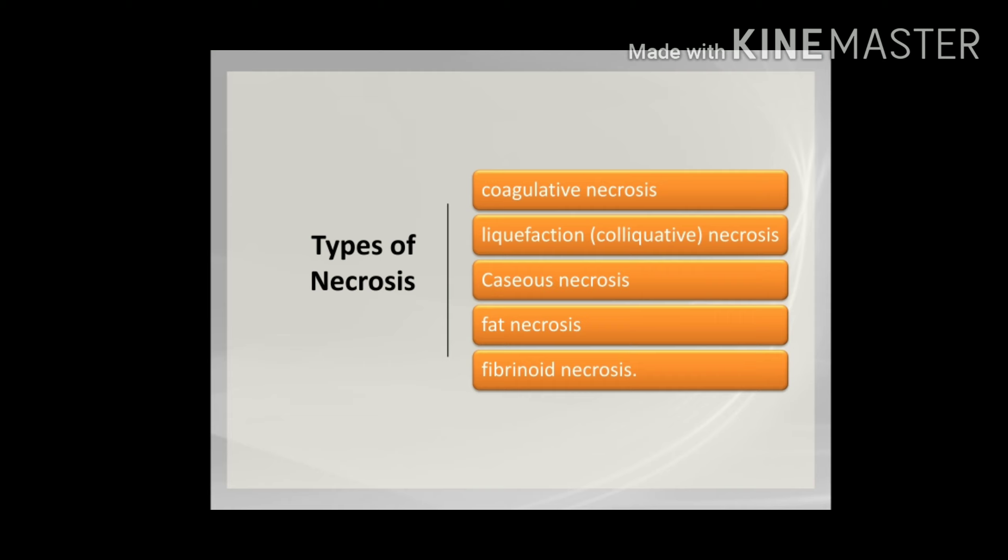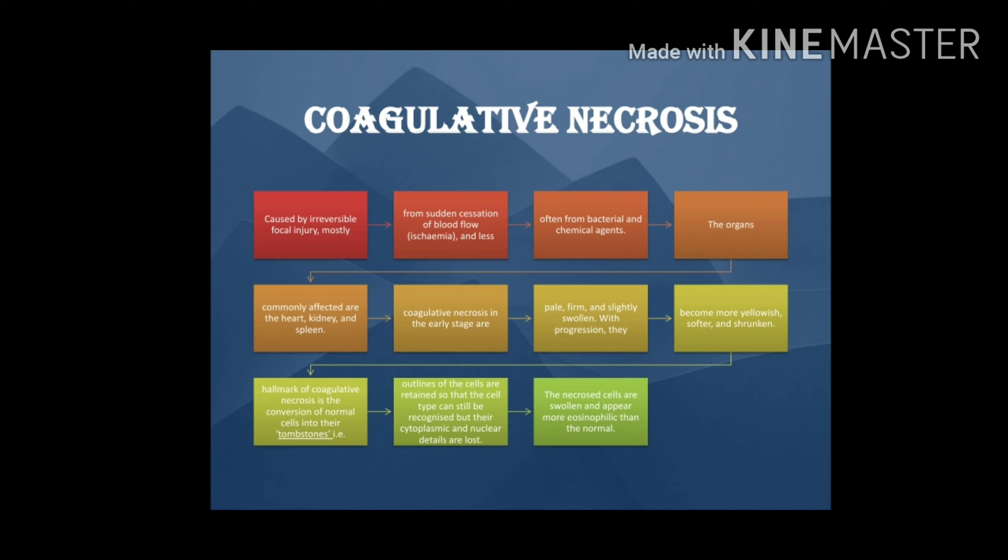There are five types of necrosis: coagulative necrosis, liquefactive necrosis (also called colliquative necrosis), caseous necrosis, fat necrosis, and fibrinoid necrosis.